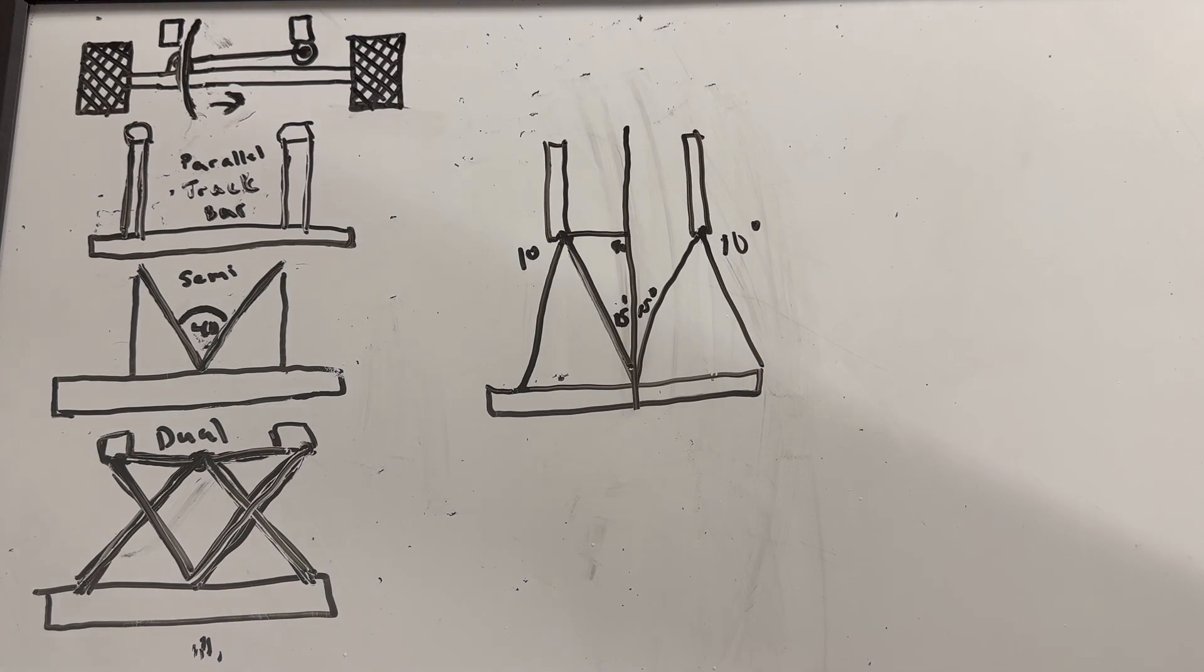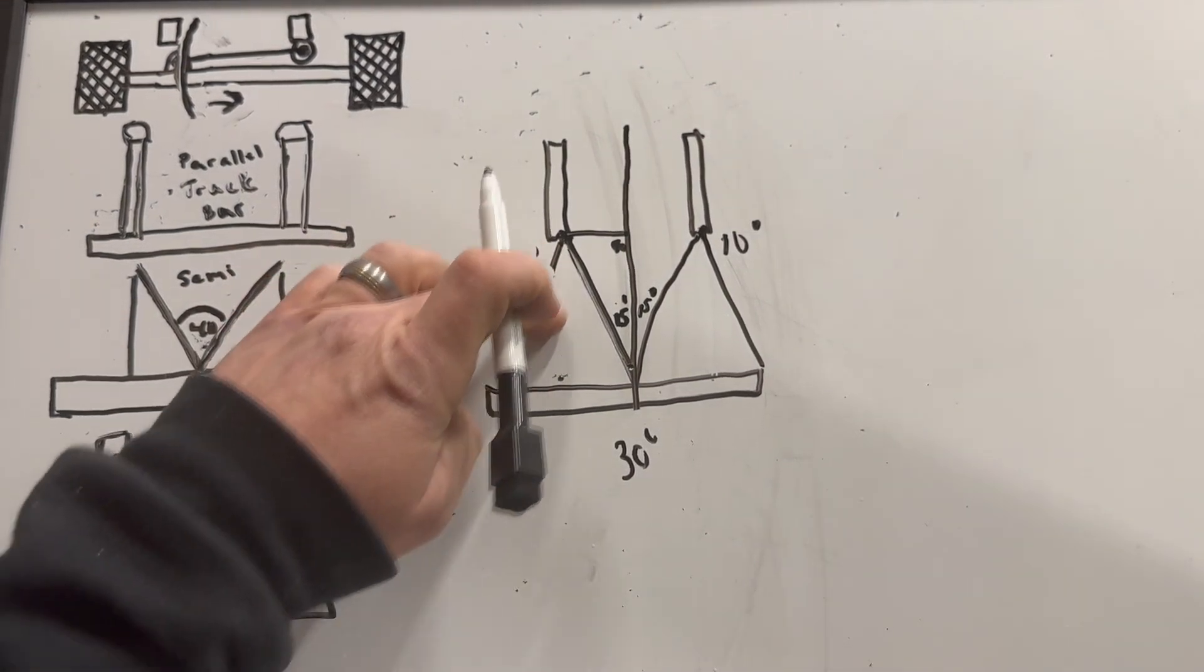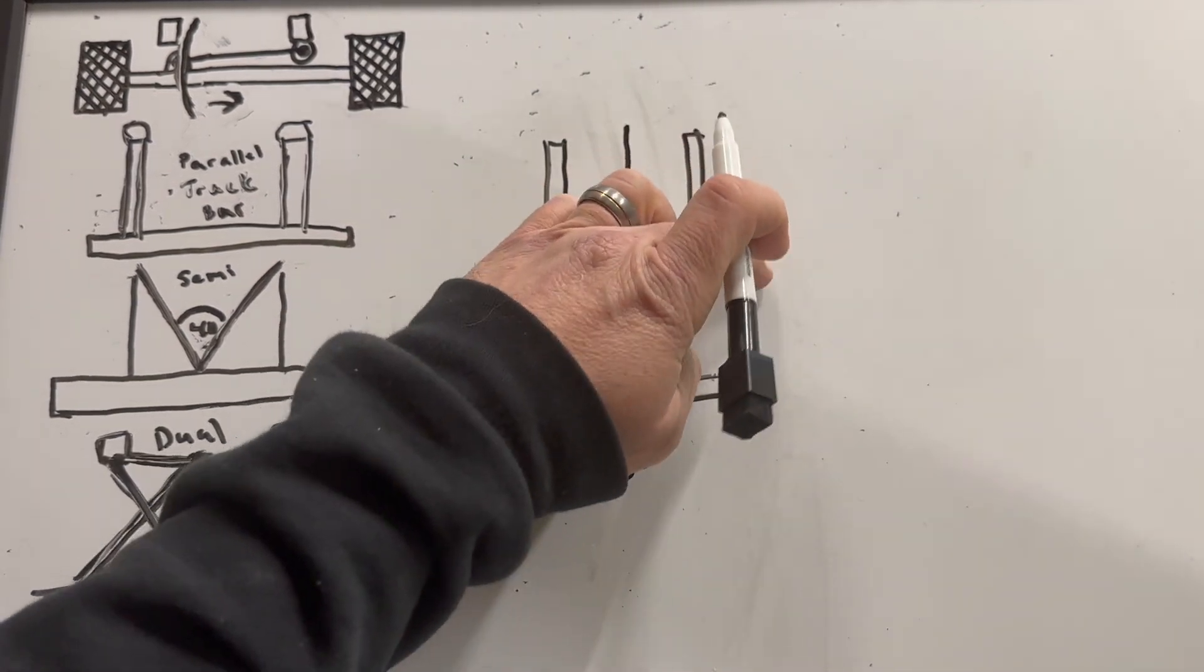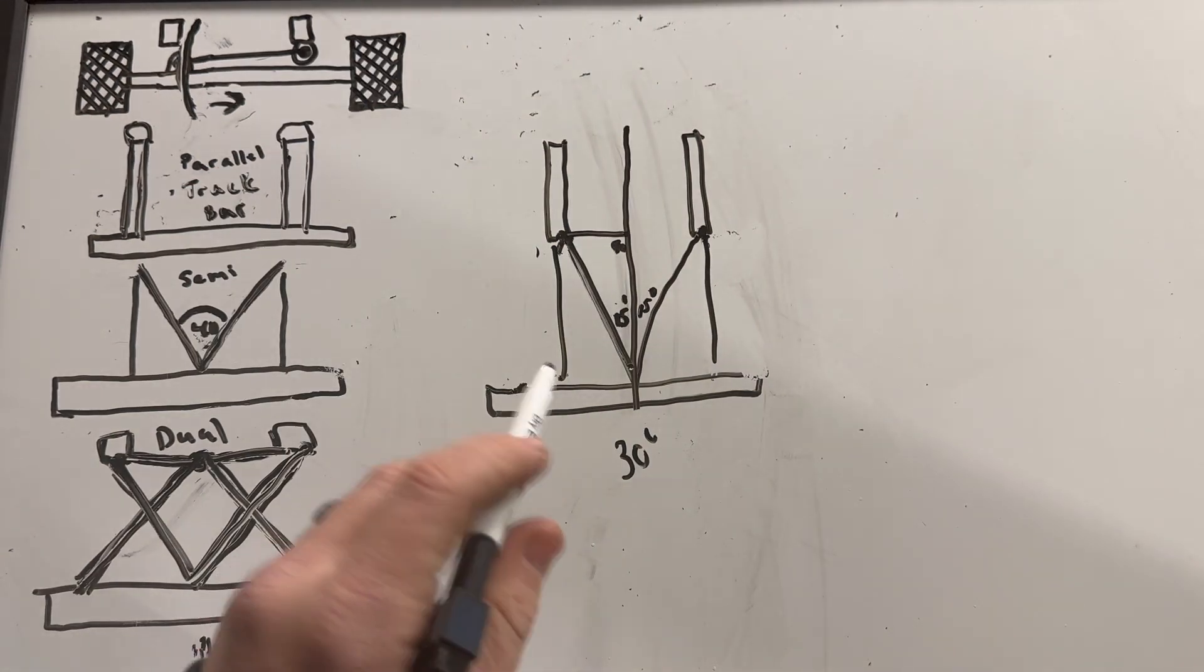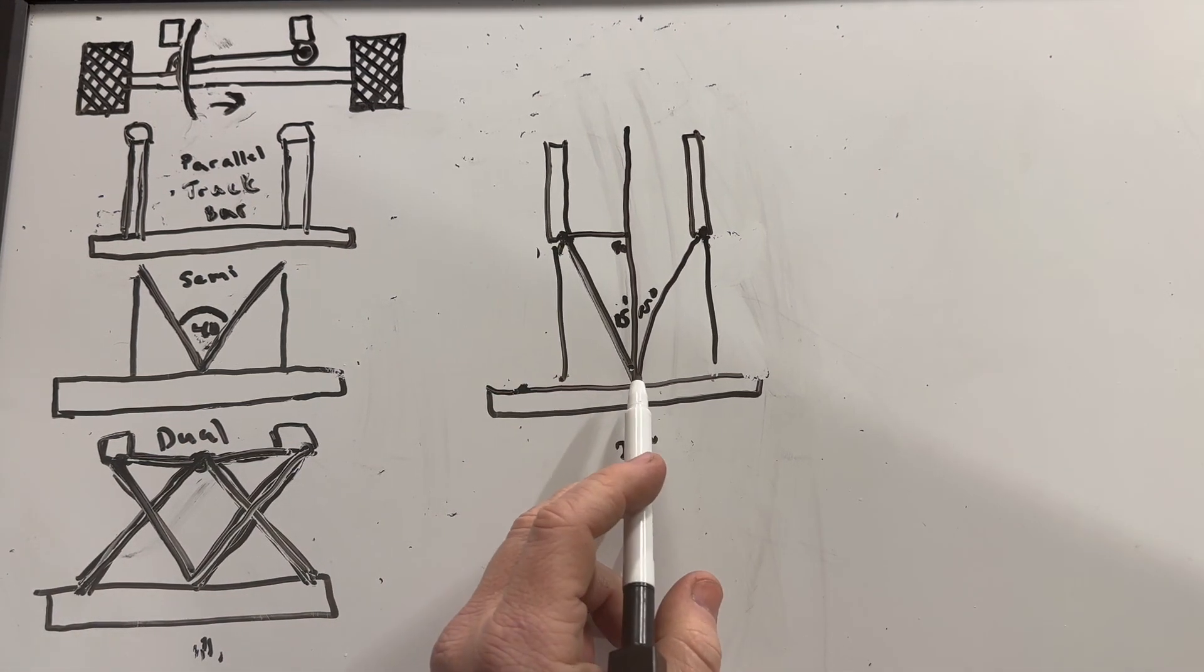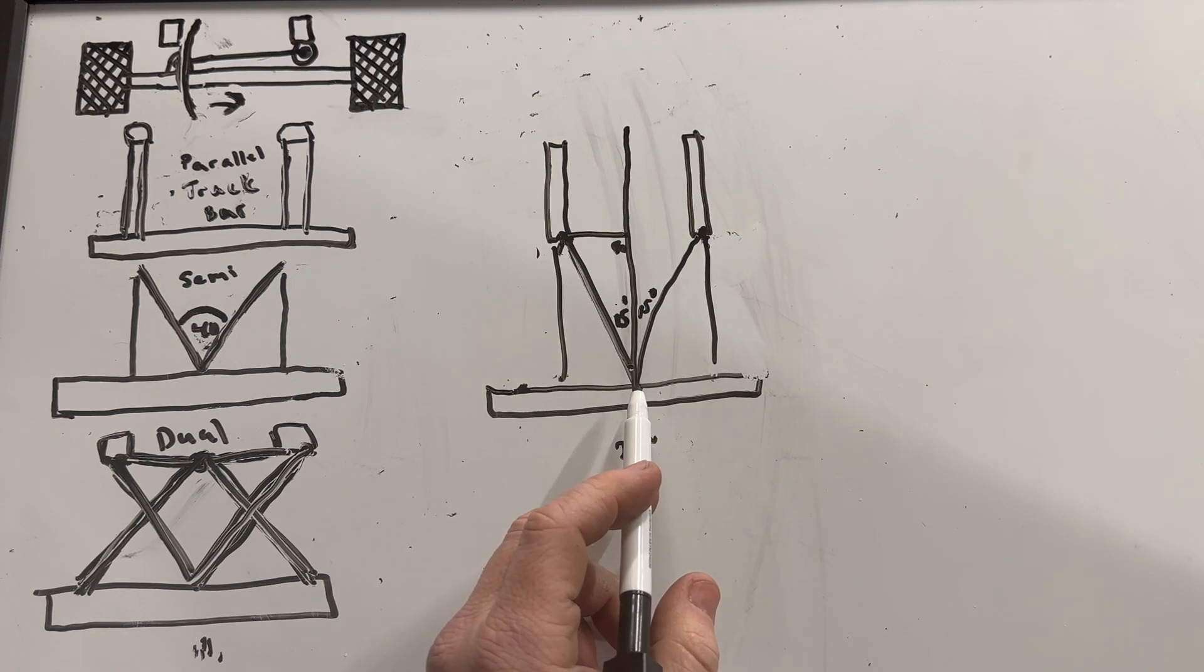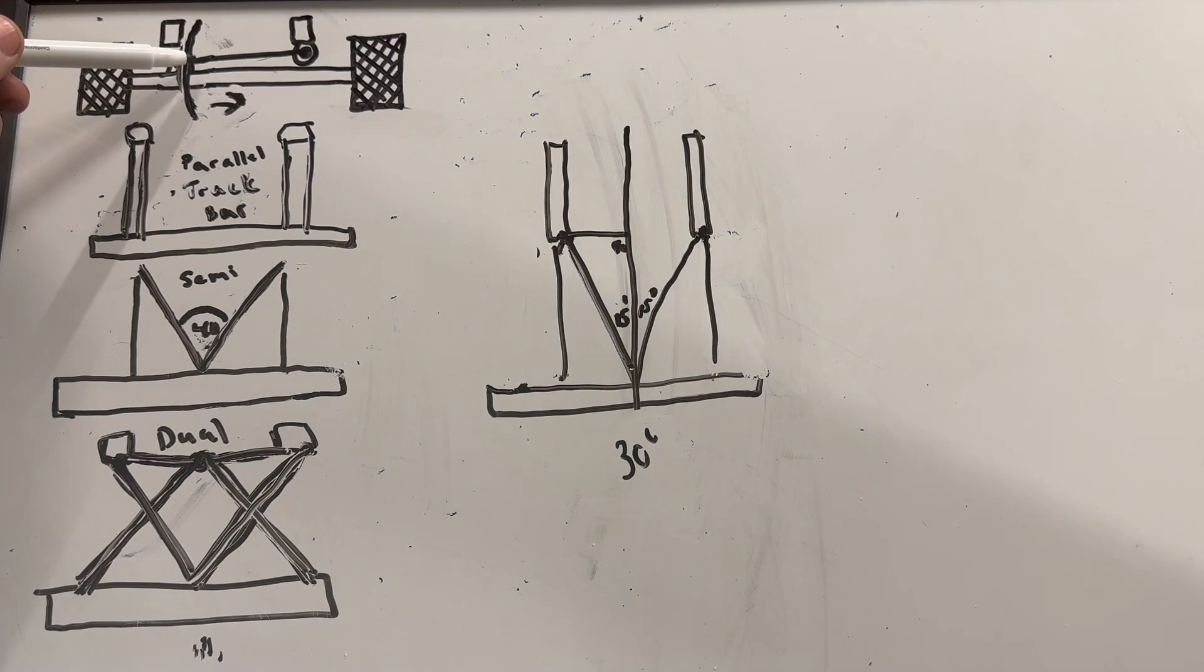Hopefully this helps some of you guys kind of get an understanding for this, because if you mess up and you end up with that 30, you know if you're still at zero out here, you're kind of in a pretty bad predicament because you cannot throw a track bar on that. It's inherently going to bind. You're going to have some triangulation where it's going to fight your side to side movement here, but what's a track bar do? It controls your side to side movement.